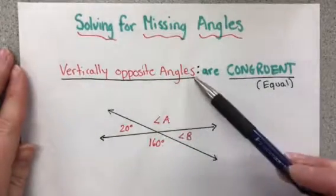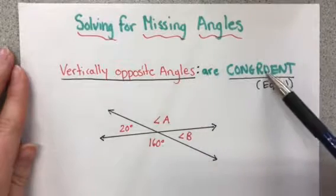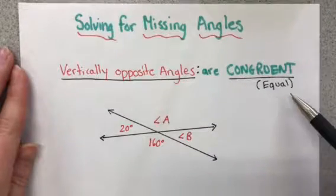What we know about vertically opposite angles: they are congruent. If you don't remember, congruent means equal.